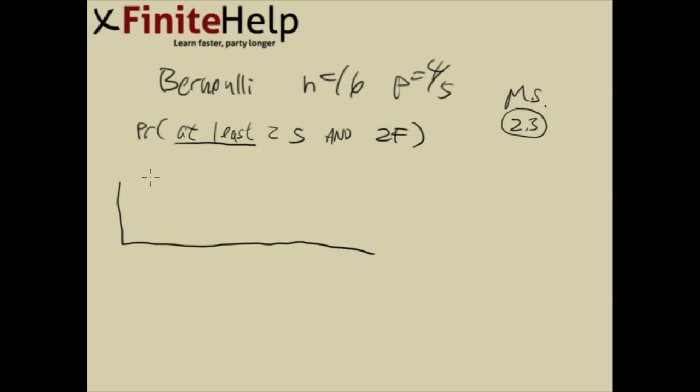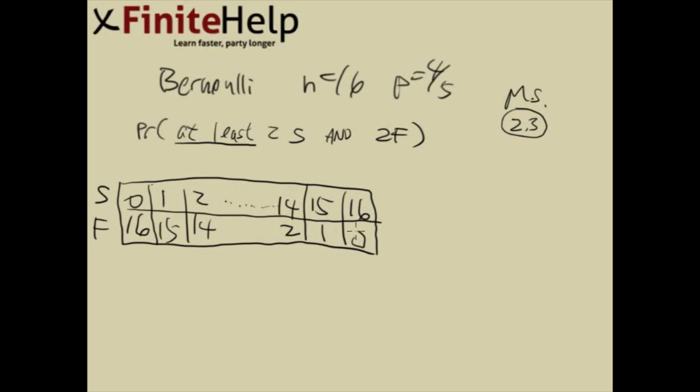So I'm going to list out all the possibilities except I'm actually not going to list them all out here. So first you have success and failures. Here you can have zero success, 16 failures, that would be the most extreme case. And then you can go to 1, 15, 2, 14. And I'm not going to actually list them all out here until I go to 15 success. Let's go to 14 success, 2 failure, 15 success, 1 failure. And then 16 success and 0 failures.